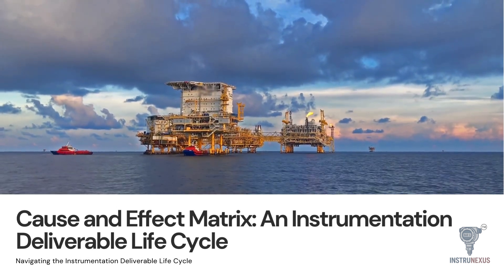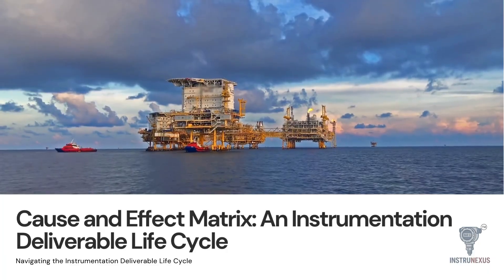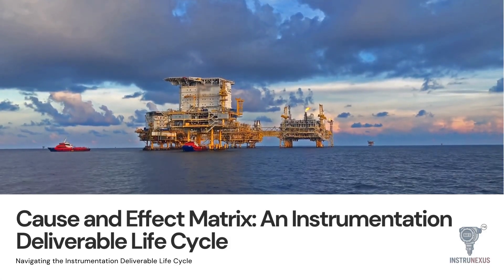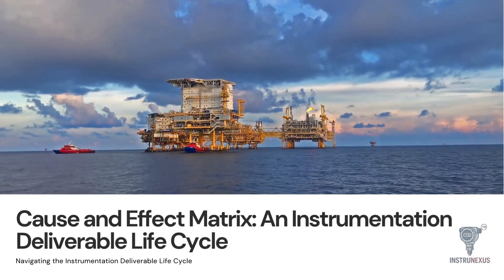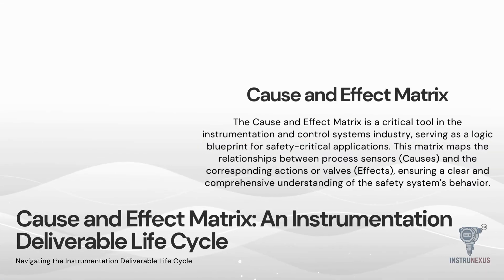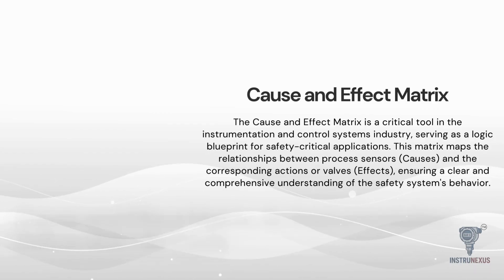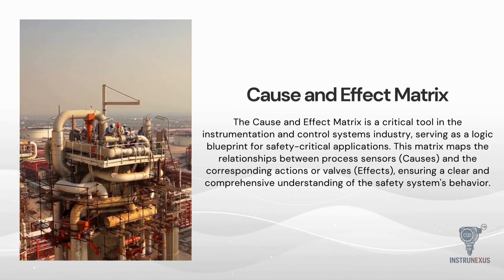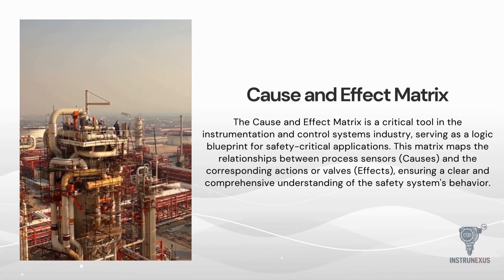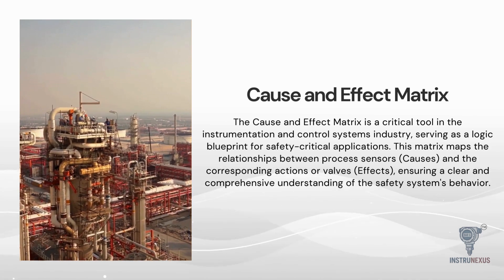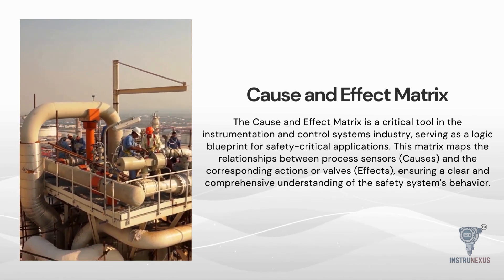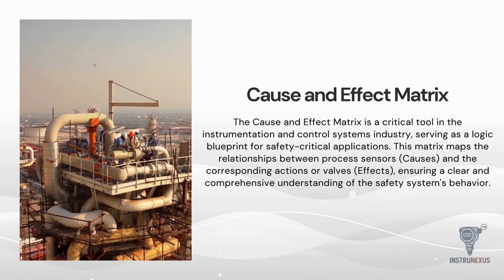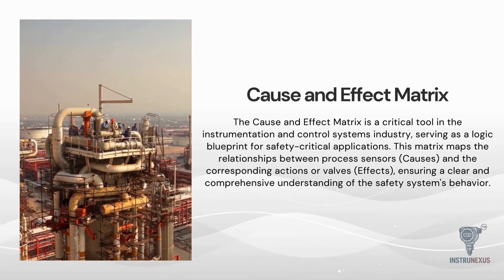Welcome to another short video from InstruNexus. This time we are going to learn about one of the very critical documents in the world of industrial automation – the cause and effect matrix. Whether you are an instrumentation engineer, a plant operator or a systems integrator, understanding this document is non-negotiable. Today we aren't just defining what it is. We are going to walk through its entire deliverable lifecycle, from the early conceptual ideas and safety studies, all the way through detailed engineering, construction and finally into daily operations. By the end of this video, you will understand how this single document acts as the central nervous system for process safety.